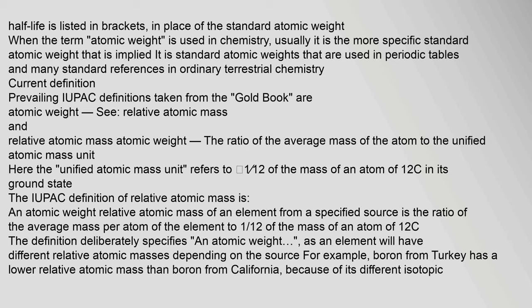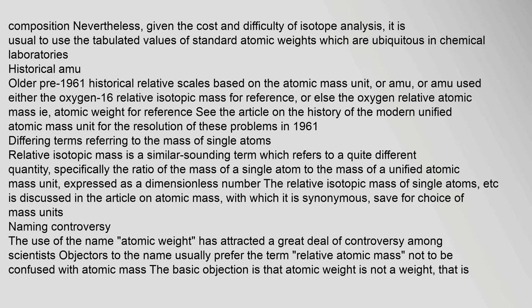For example, boron from Turkey has a lower relative atomic mass than boron from California because of its different isotopic composition. Nevertheless, given the cost and difficulty of isotope analysis, it is usual to use the tabulated values of standard atomic weights.